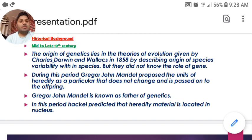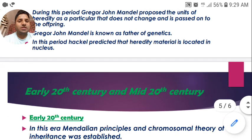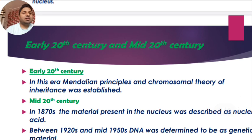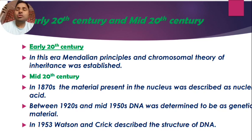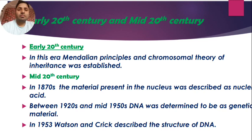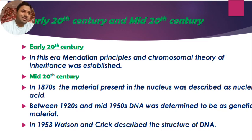In this same era, in the late 19th century, another scientist named Haeckel gave the concept that the hereditary material — the genetic material, DNA and RNA — is present in the nucleus. Then, in the early 20th century, the Mendelian principles and chromosomal theories of inheritance were established — the law of segregation and the law of independent assortment. Mendel's work was recognized later and these principles were established in the early 20th century.